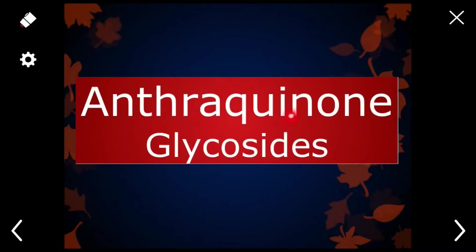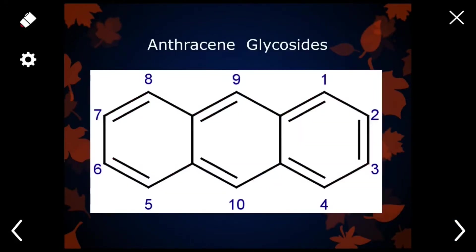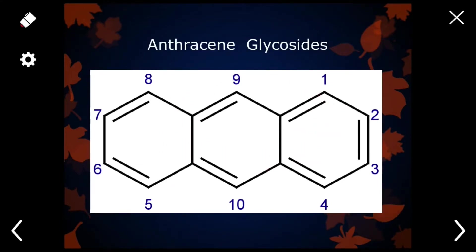Now we will discuss about what are anthraquinone glycosides. Anthraquinone glycosides are basically derivatives of the anthracene ring. If you memorize this ring, it will be very easy for you to make structures related to anthracene or anthraquinone glycosides. Anthraquinone glycosides and anthracene glycosides are two names for the same type of glycosides.